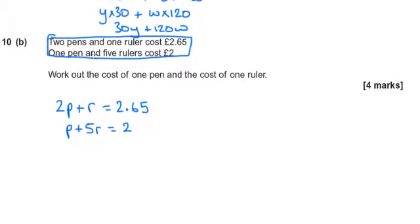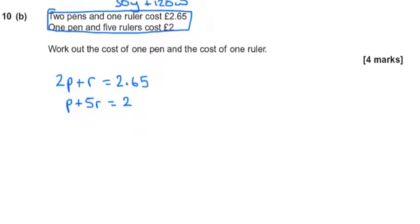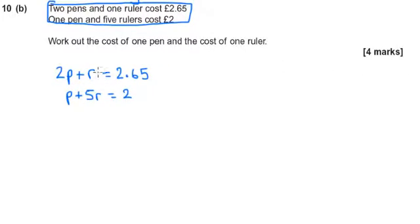Two things cost this much and two things are the same type but different numbers cost something else. It's simultaneous equations, it always will be. So how do we solve simultaneous equations? Well we need to make one of the letters the same amount. For this one I'm going to make the P's the same. So I'm going to times everything by 2.